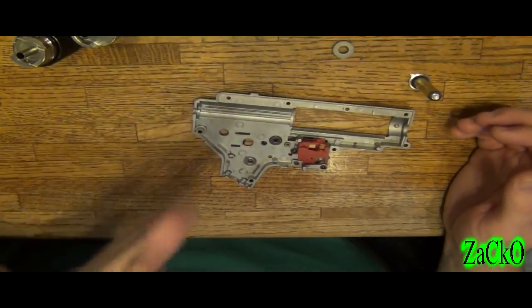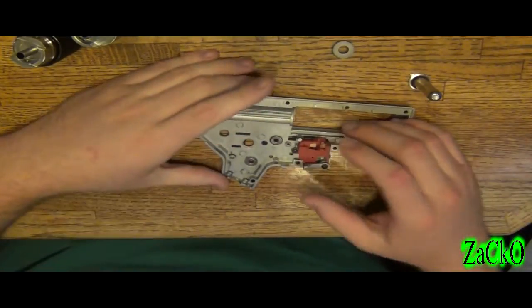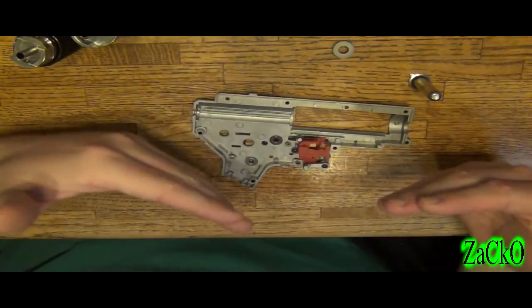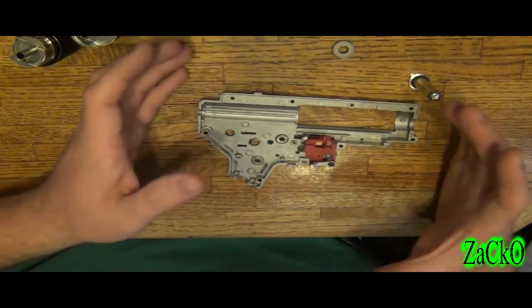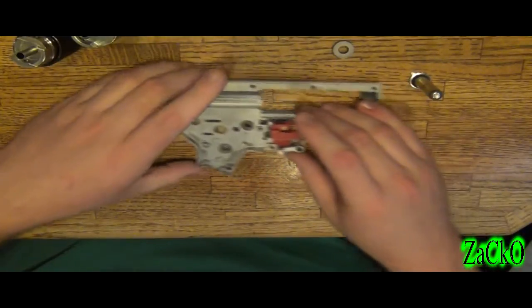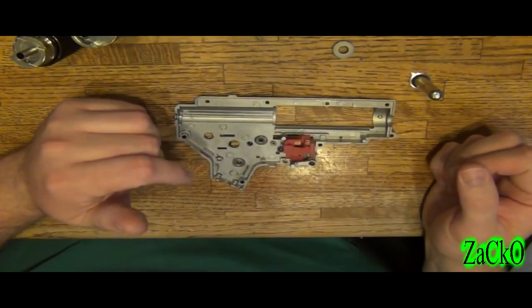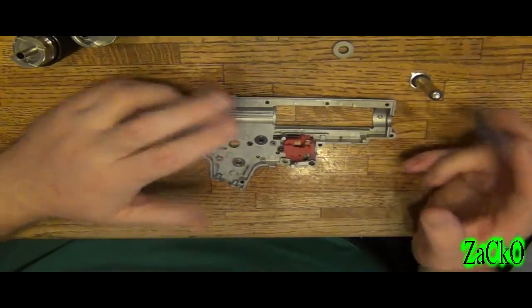All right, this is the first time I have the camera backwards and it looks straight to me, but we're going to see how it comes out rendered. Maybe this is how people do it. This gives a great top view of the gearbox.